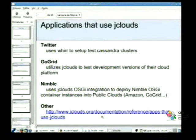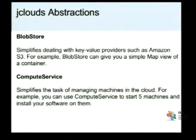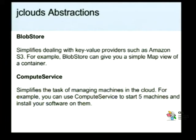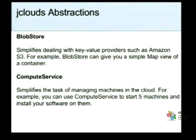As duas principais abstrações que o jClouds provê são o BlobStore e o Compute Service. O BlobStore simplifica o uso de serviços de nuvem que usam um container do tipo chave-valor, como por exemplo o Amazon S3. Para containers de arquivos como o Amazon S3, o BlobStore funciona como um gerenciador desse container. Lá você vai poder inserir arquivos nesse container, remover arquivos, visualizar o conteúdo através de uma visualização de mapa.